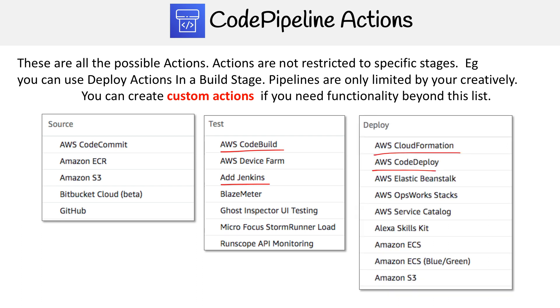Then you have your deploy actions, the most popular being CloudFormation and CodeDeploy. There are a bunch of other ones as well, like Elastic Beanstalk, Alexa Skill Kit, and Amazon S3.